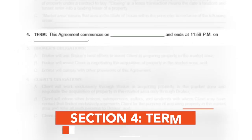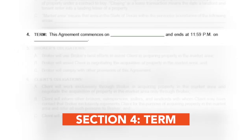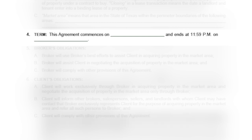The fourth section is Term. This agreement must start and end on a specific date. It's important to fill in the termination date. If you fail to do so, this agreement is not enforceable under state law.